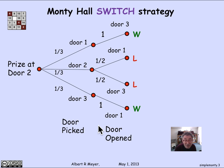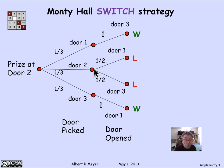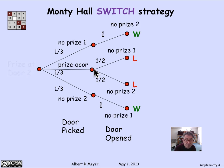A better way to understand this tree is instead of saying the prize is at door two and the contestant chooses door two, and having to worry about all the other branches that are symmetrically like this, we could have reformulated the tree model by saying: let's consider the cases that wherever the prize is, there are three possibilities. The contestant picks the door where the prize is, or they pick the next door in some counterclockwise direction from where the prize is, or going around among the doors in a circle, they pick a door that's two doors away from where the prize is. These are the cases: either the contestant picks the prize door, the first door that doesn't have the prize, or the second door that doesn't have the prize. Each of those occurs with probability one third.